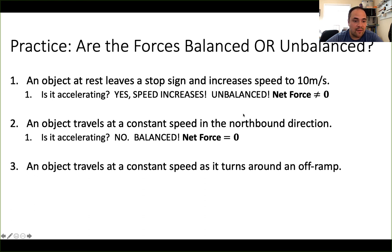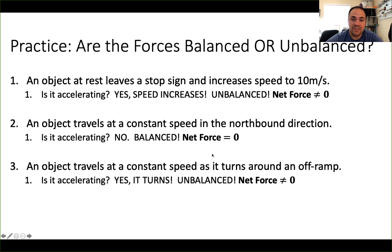How about this one? An object travels at a constant speed as it turns around an off ramp. We see that it is traveling at a constant speed, but it is turning. In this case, we do have acceleration because it's changing direction. Therefore, there must be unbalanced forces acting on the object to cause its velocity to change — net force is not zero because the object is accelerating.